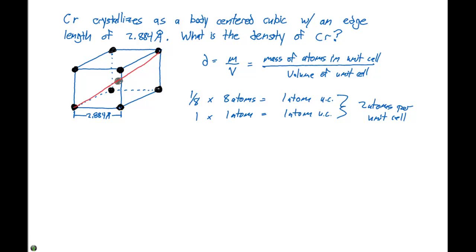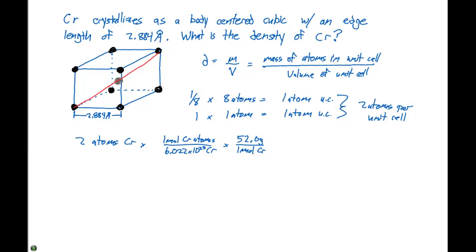We need to determine the mass of two chromium atoms. From the periodic table, one mole of chromium atoms is 52.0 grams, and there are 6.022 times 10 to the 23rd atoms per mole. This gives us a mass of 1.73 times 10 to the minus 22 grams for two chromium atoms.